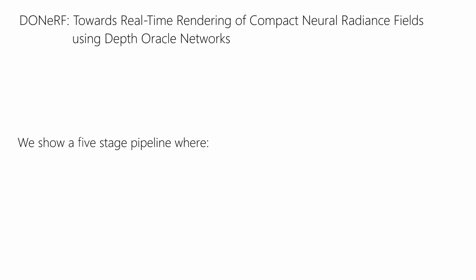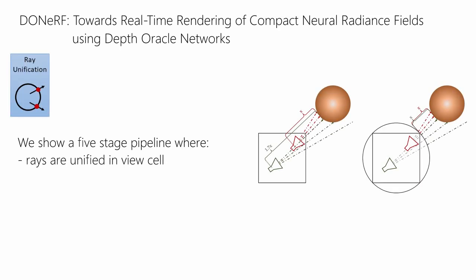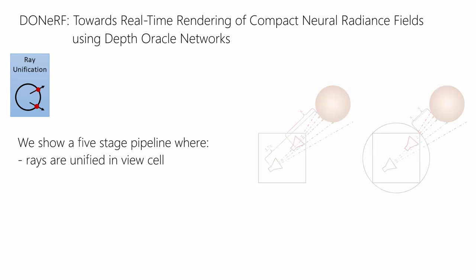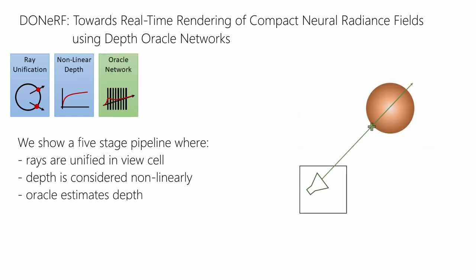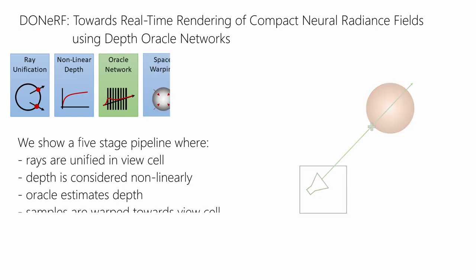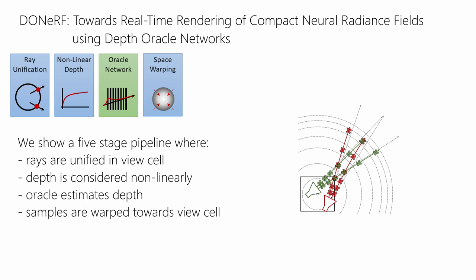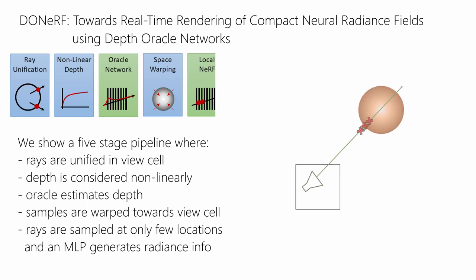DoNerf consists of a five-stage pipeline. First, rays are unified so that identical rays in a given view cell map to the same origin. We consider space non-linearly to handle scenes of arbitrary scale and further use an oracle network that estimates ideal sample locations based on discretized depth. We generate samples based on the oracle's prediction, warp them towards the view cell, and perform ray marching with a second shading network that needs as few as two samples to achieve quality identical to previous work.